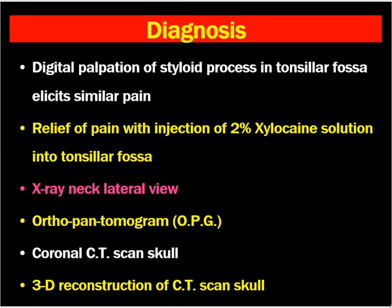How to diagnose Stylalgia? The patient presents with mostly non-specific complaints. When the patient complains of pain, dysphagia, irritation in the throat, or non-specific throat pain, we have to palpate the tonsillar fossa. If we can feel a bony structure there, we have to think of an elongated styloid process leading to pain. When we inject 2% xylocaine solution into the tonsillar fossa, the patient will have relief of pain. Then we have to think of pressure due to the elongated styloid process, because xylocaine is an anesthetic solution.